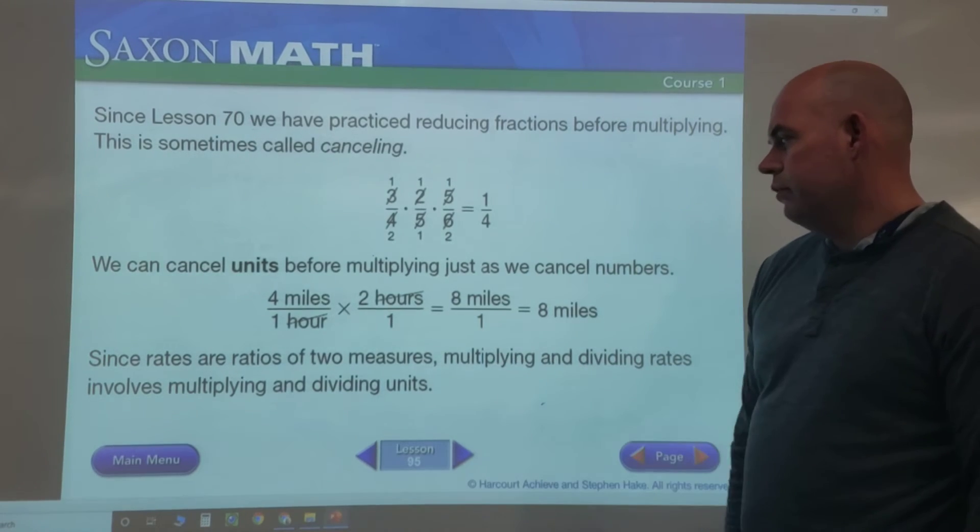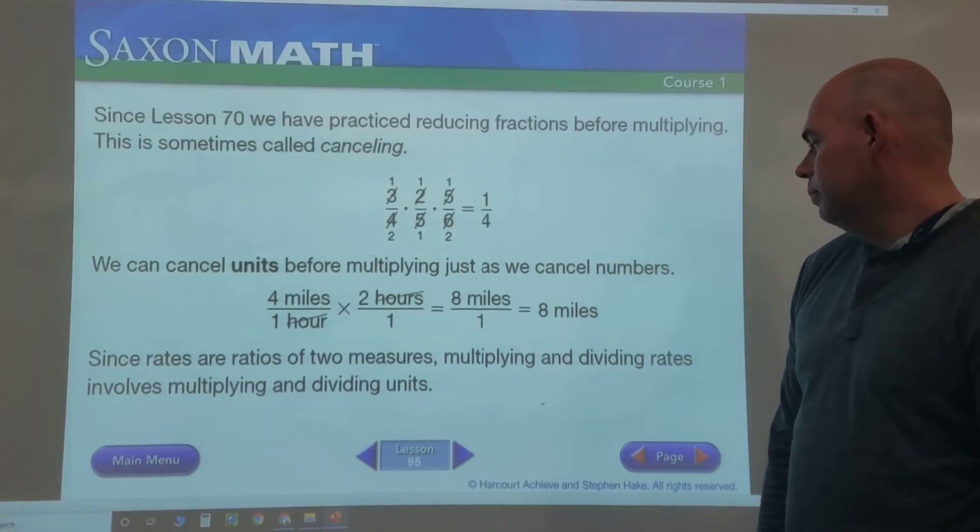Since rates and ratios are ratios of two measures, multiplying and dividing rates involves multiplying and dividing units. That's the tricky thing here, especially when you're working with different kinds of units.